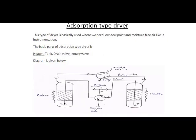The next type of dryer we are going to study is adsorption type dryer. The basic parts of this dryer are heater, tank, drain valve, rotary valve. In this kind of dryers, the moisture gets collected in the tank and the material which is used in the tank is basically granule type materials.